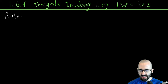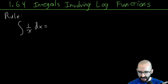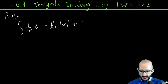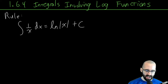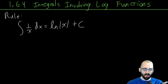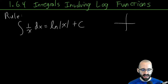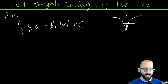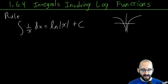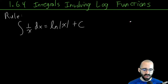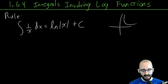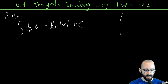The first rule is that the anti-derivative of 1/x with respect to x is the natural log of the absolute value of x. We know the derivative of the natural log is 1/x. Adding the absolute value reflects the natural log, expanding its domain to include negative numbers — which is useful since 1/x has a domain of both positive and negative numbers.